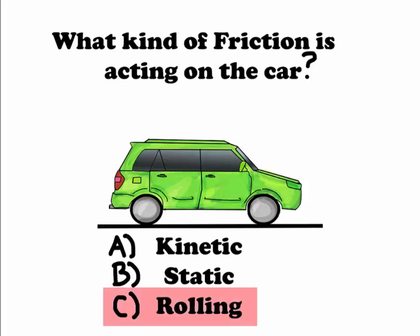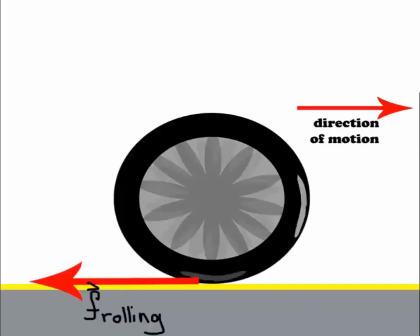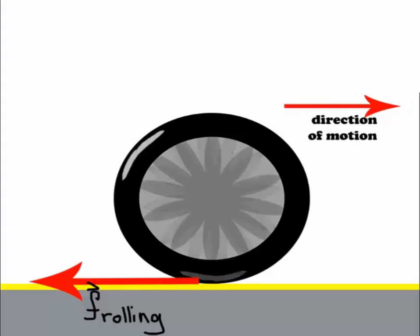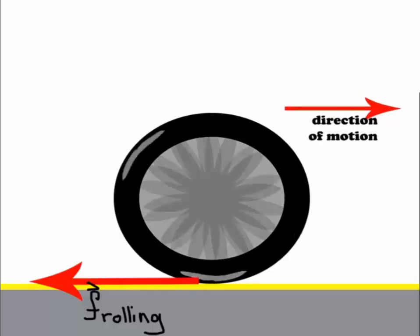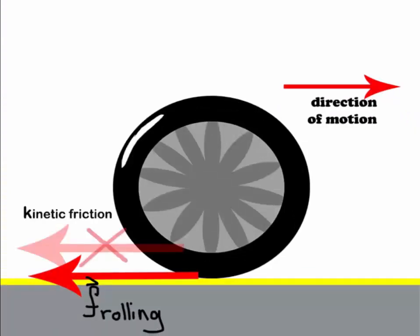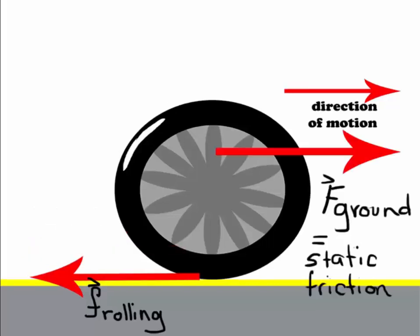The correct answer is rolling friction. Let's see why. The flattening of the tire due to its contact with the ground causes rolling friction. It slows down the car, so it's opposite the direction of motion. In case you're wondering about the other friction, kinetic friction and rolling friction don't act at the same time. And the propulsion force the ground exerts on the tire is already a type of static friction. So we will be solving for the rolling friction.